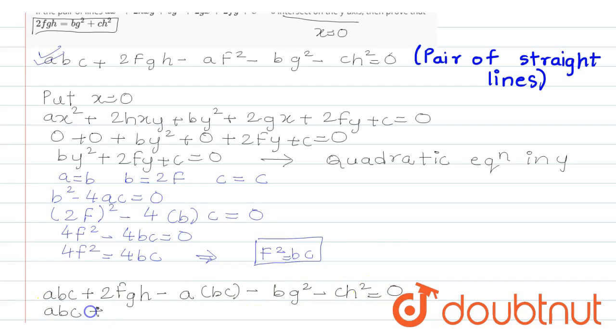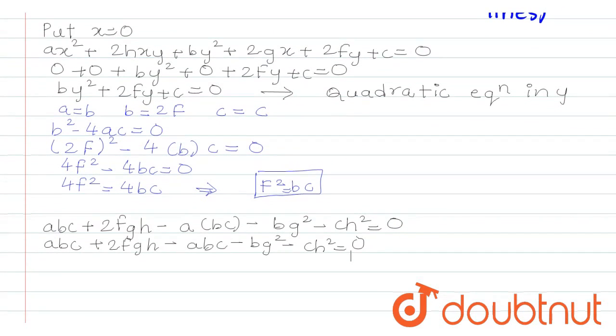It becomes ABC plus 2FGH minus ABC minus BG square minus CH square equals 0. Here we can cancel out ABC. Plus ABC minus ABC gets cancelled out. So remains 2FGH minus BG square minus CH square equals 0. At last I can write 2FGH equals BG square plus CH square.